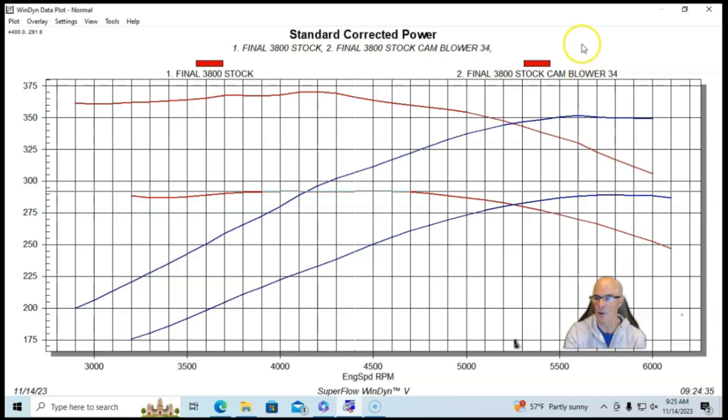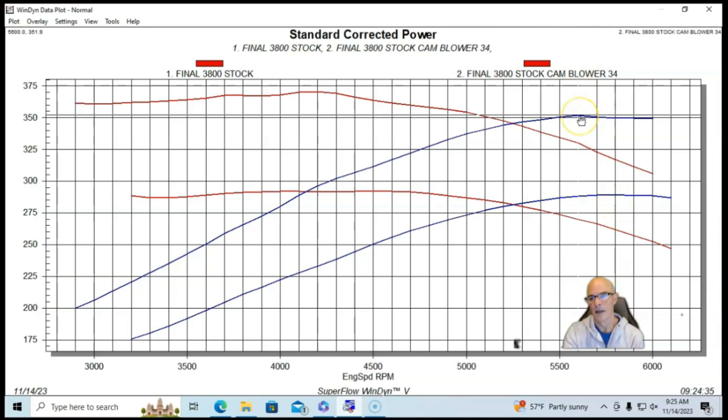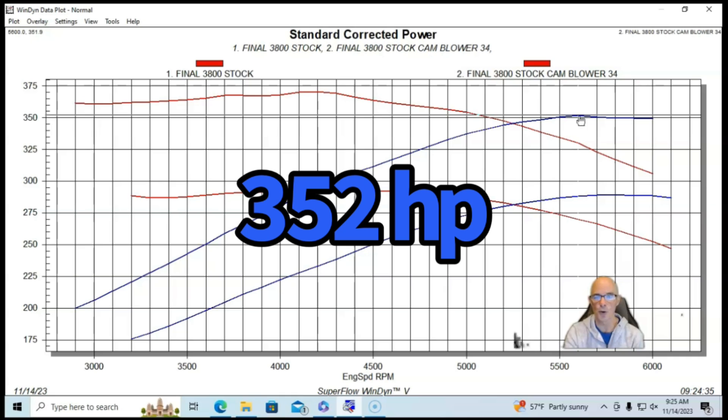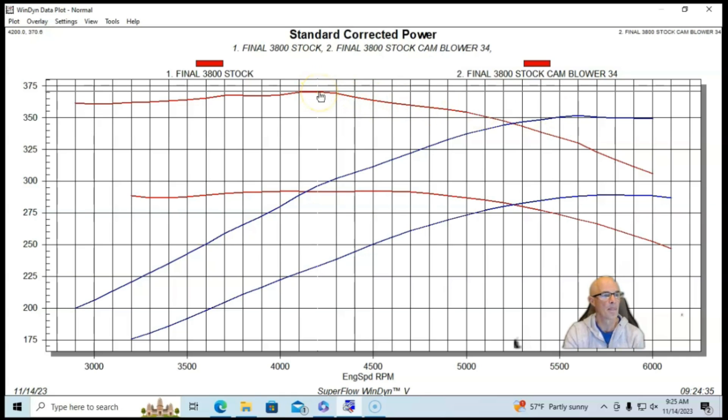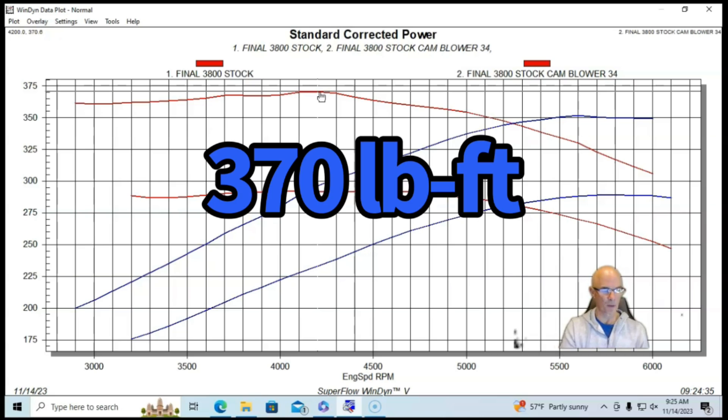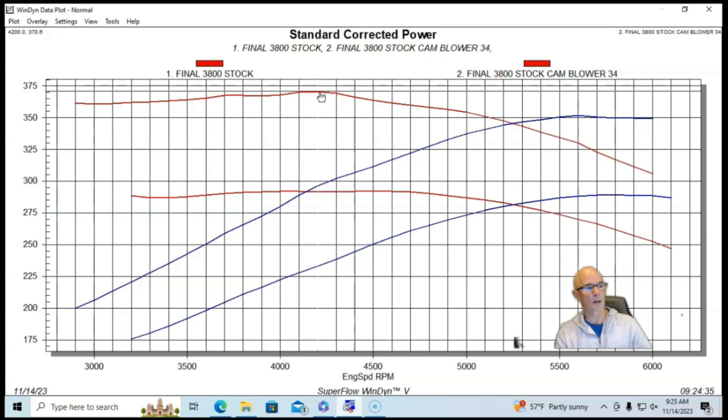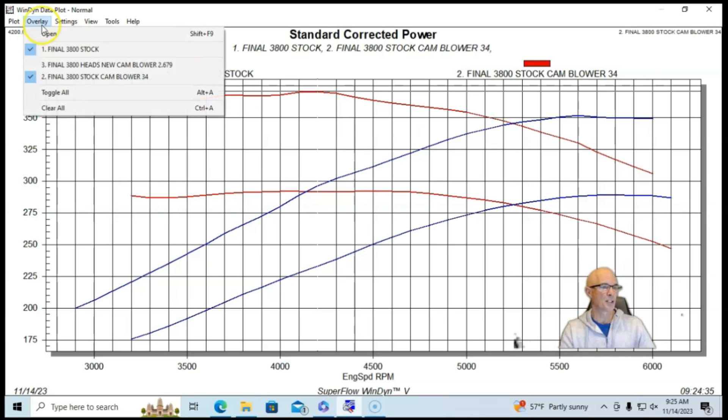We also ran on E85 so we could run full timing and stuff on it. Running in this manner, the combination produced 352 horsepower and 370.6, maybe we'll call that 371 foot-pounds of torque.